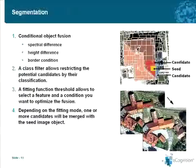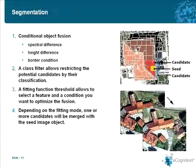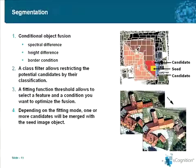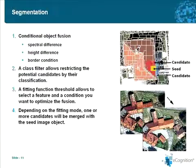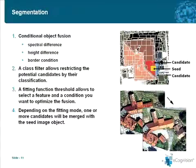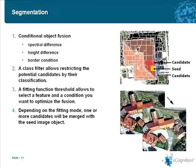Since the topic was to identify very specific features — in this case buildings and elevated vegetation — the segmentation was adapted to the problem. A conditional object fusion approach was chosen in which the spectral difference, but also the elevation difference or height difference, and the location of the object along the border were used to create an optimized segmentation which would best identify the rooftop areas or components of the rooftop areas.